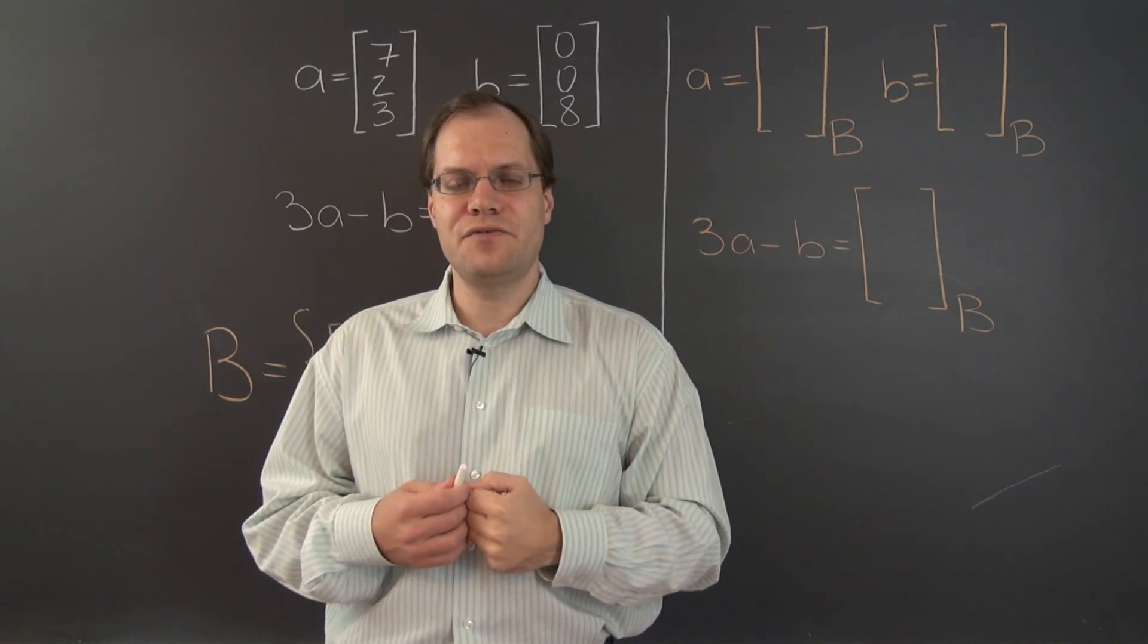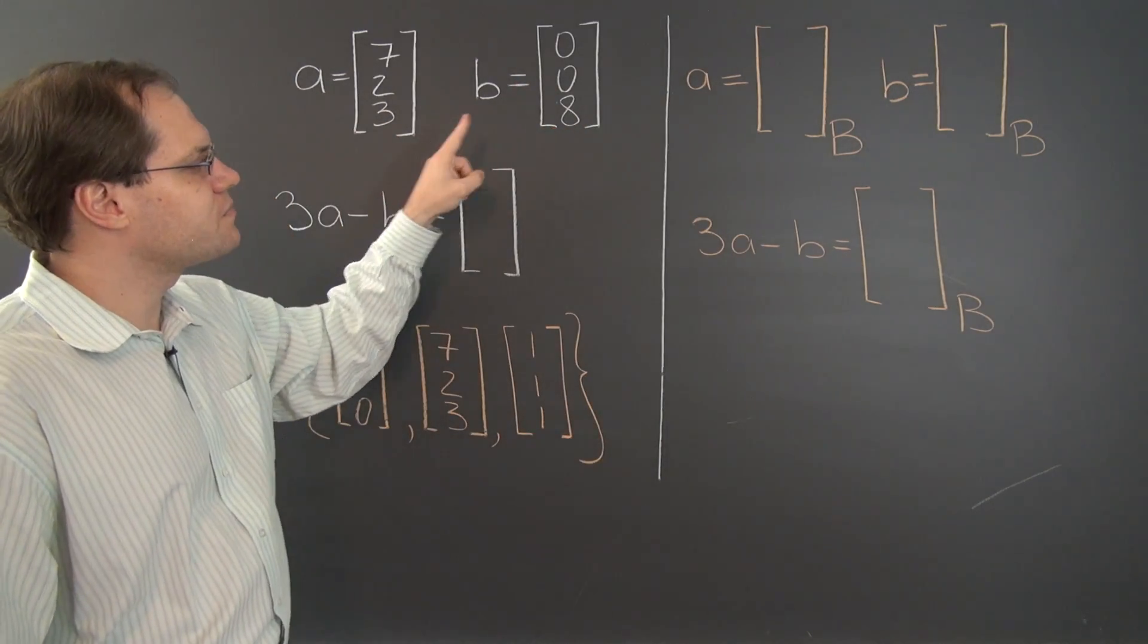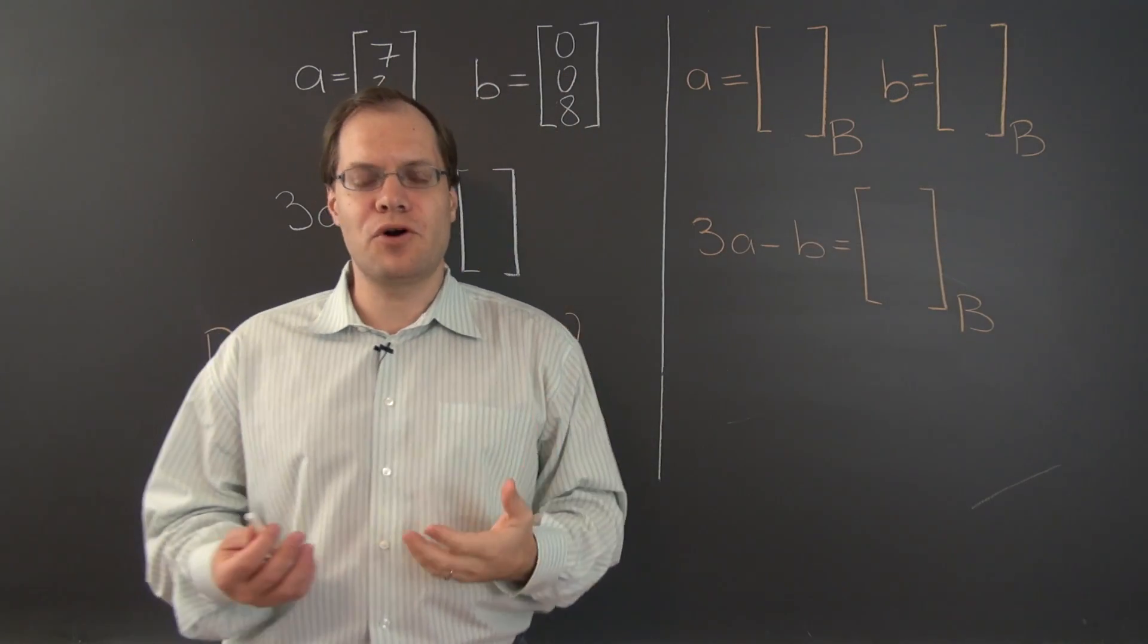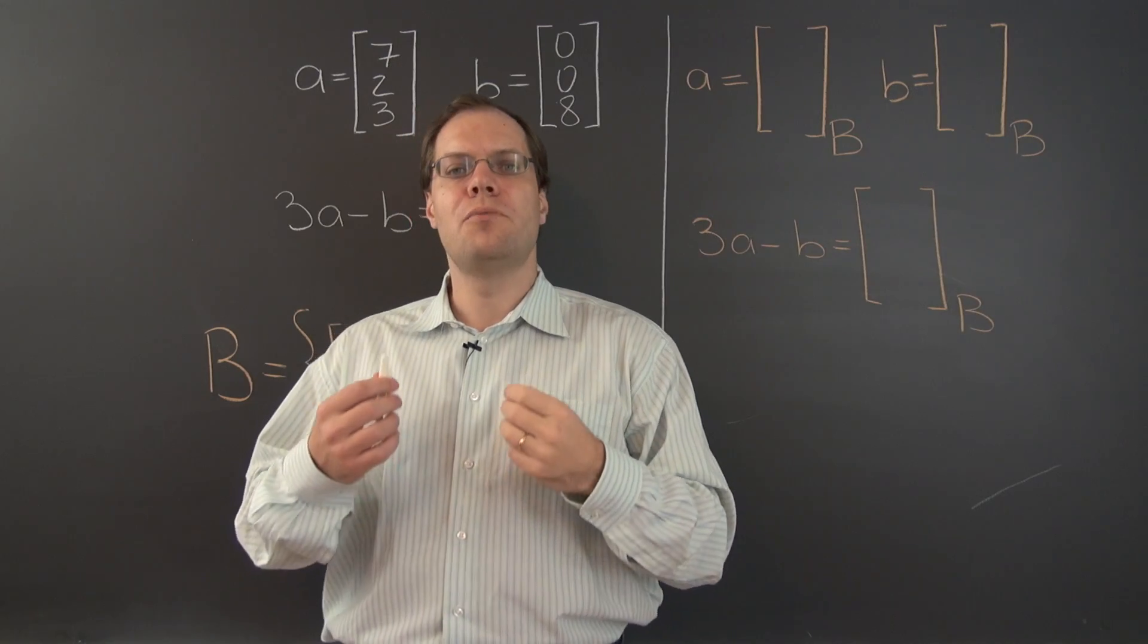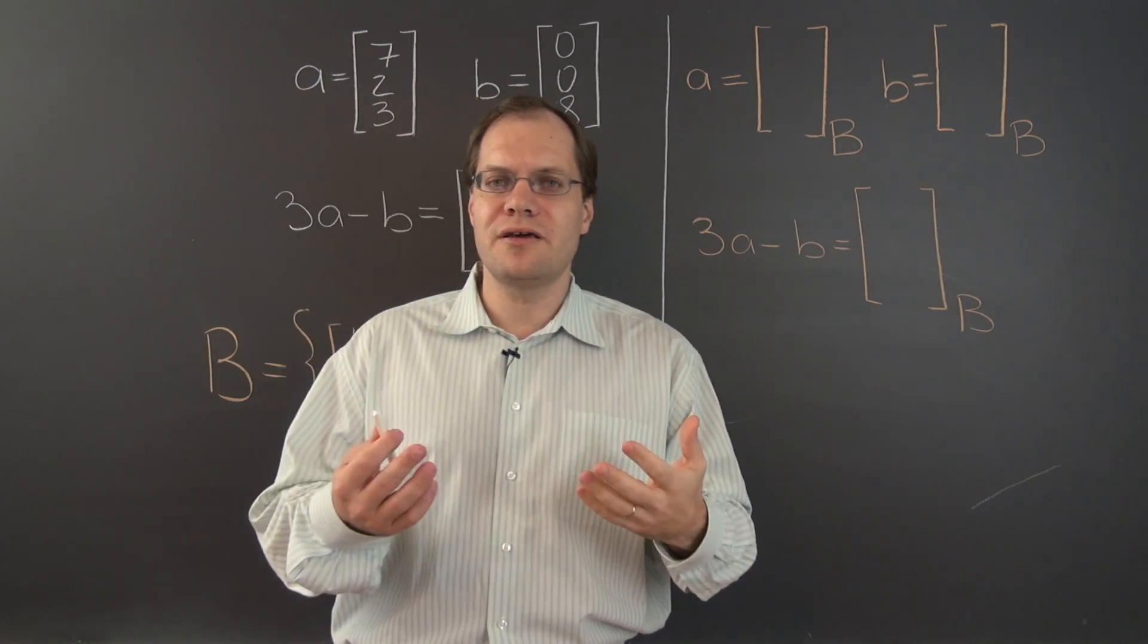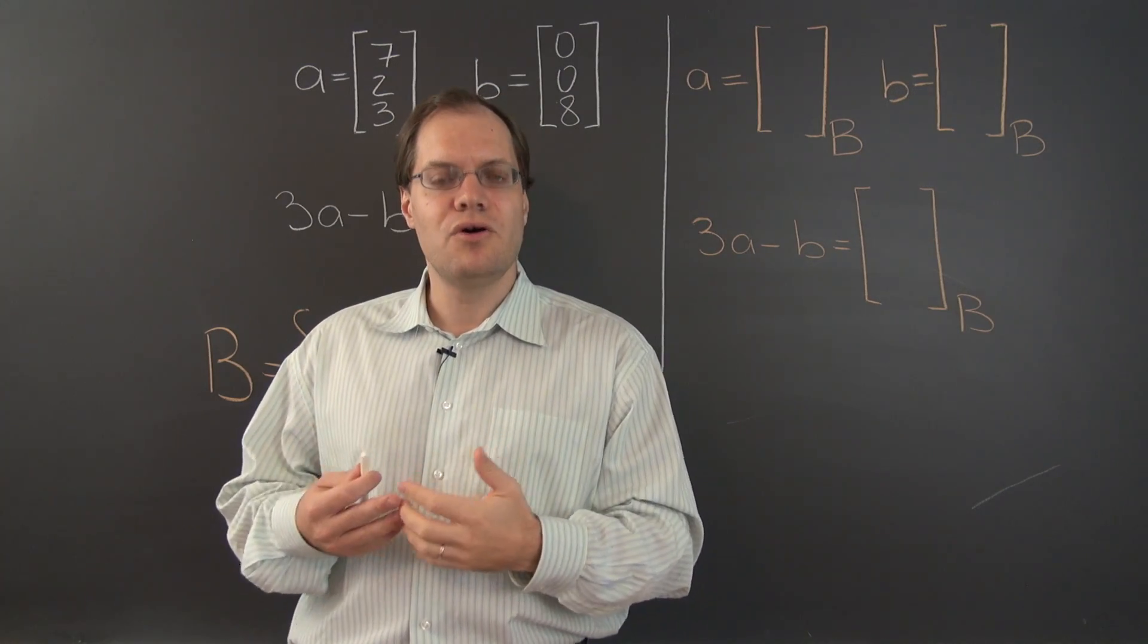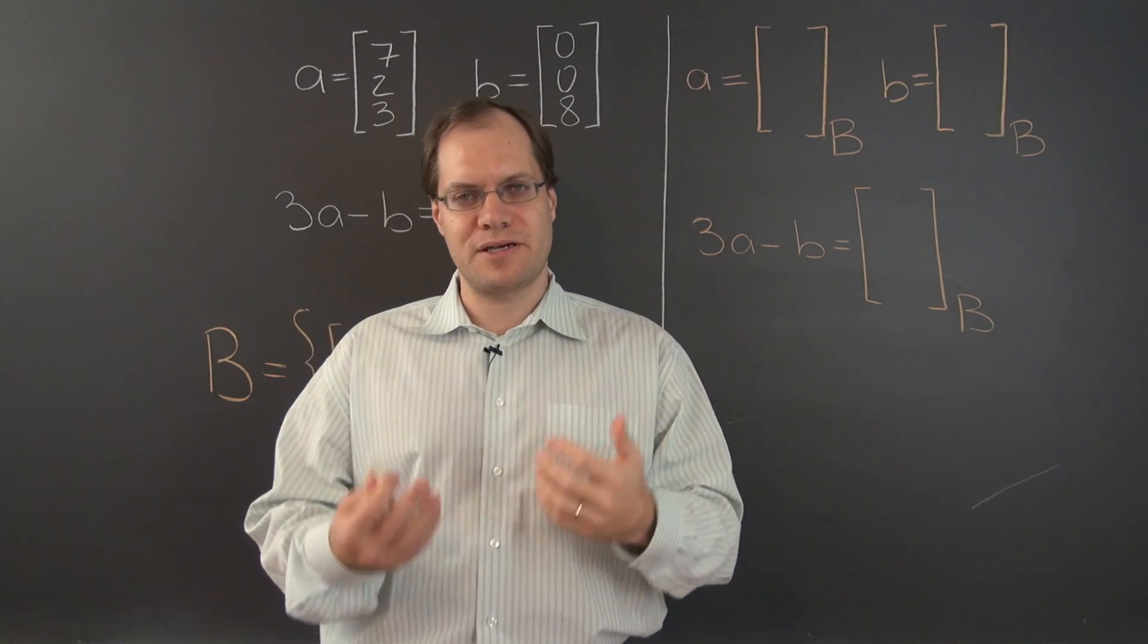But what's slightly confusing in the case of Rn is that the vectors themselves and their component space representations have the same format. Of course the numbers will be completely different, but in both cases we're looking at triplets of numbers. So in some situation you may be looking at a triplet of numbers and not necessarily know whether it's the vector itself or its components with respect to some basis.